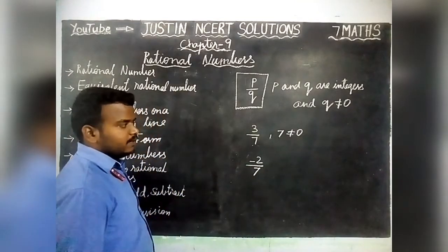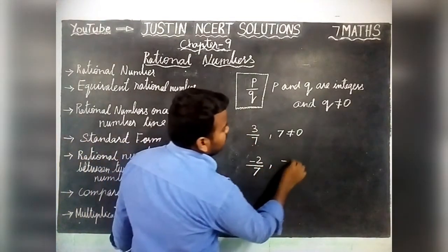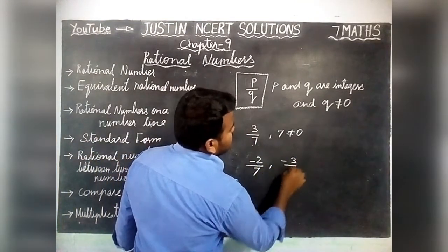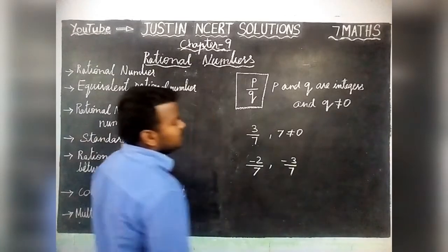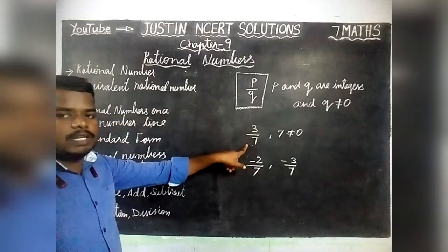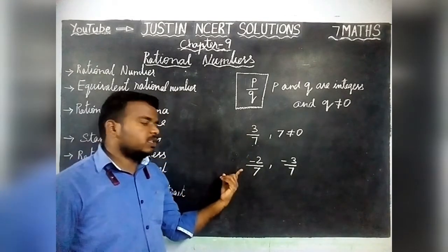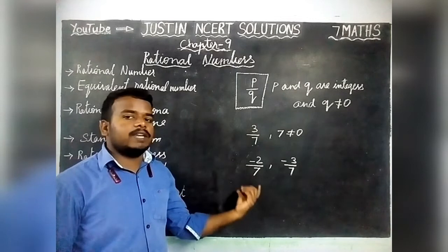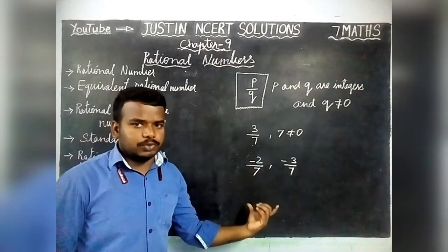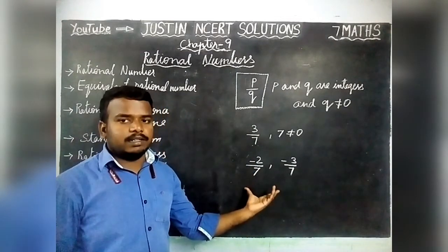For example, minus 2 by 7, or the opposite of 3 by 7, which is minus 3 by 7. In Fractions we will have only positive numbers, but in Rational Numbers we will have negative numbers also. That is the meaning of Rational Numbers.